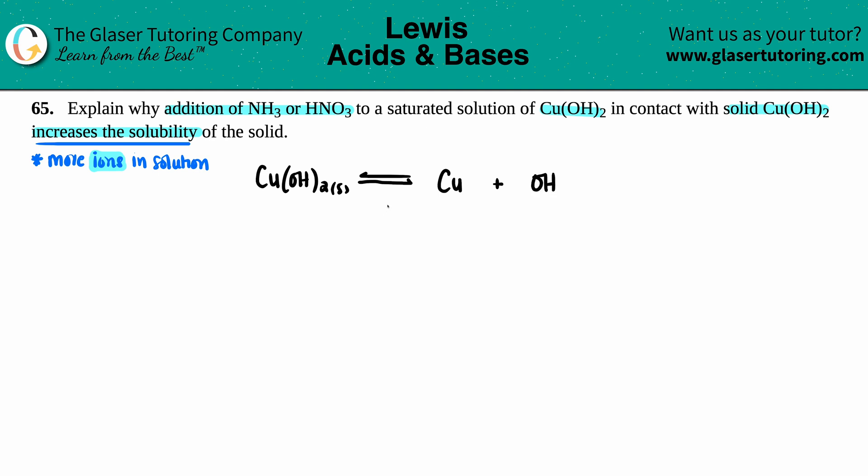The charges here, you can use your subscripts to figure out what the charges are. You can crisscross these numbers back up. So the one crisscrosses up telling me that the OH is a negative one charge, and the two crisscrosses up telling me that the copper was a plus two. If we wanted to balance this, we would put a two in the front, and these are the two ions that they're talking about.